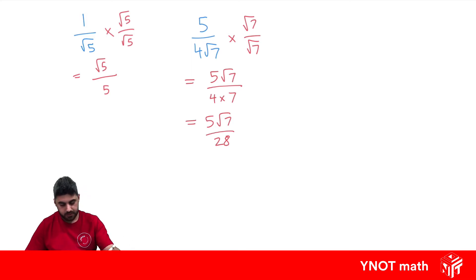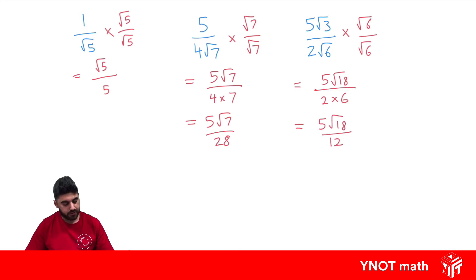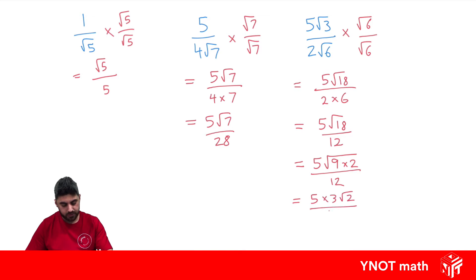Let's have a look at 5 root 3 over 2 root 6. Again, I only need to multiply by root 6 over root 6 to rationalize this denominator. 5 root 3 times root 6 is going to be 5 root 18, and 2 root 6 times root 6 is going to be 2 times 6, which is 12. Root 18 can be simplified, so we get 15 root 2 over 12.